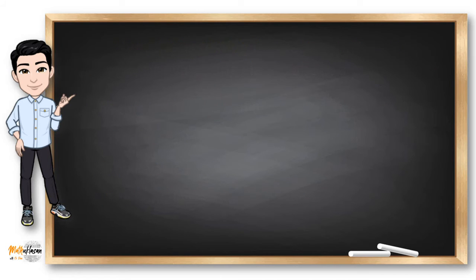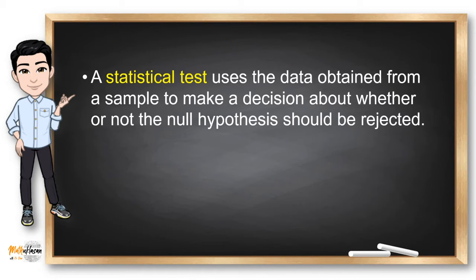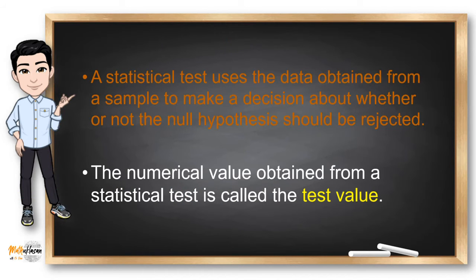One of the important steps in hypothesis testing is identifying the appropriate statistical test, wherein we use the data obtained from a sample to make a decision about whether or not the null hypothesis should be rejected. Some examples are t-test, z-test, chi-square, analysis of variance, and so on. The numerical value obtained from a statistical test is called the test value.